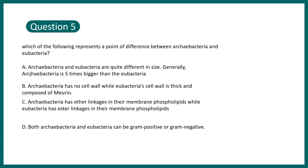Question 5: Which of the following represents a point of difference between archaebacteria and eubacteria? These are time-killer questions with a lot of description. Option A: archaebacteria and eubacteria differ in size — archaebacteria is generally five times bigger. Option B: archaebacteria has no cell wall while eubacteria has a thick cell wall composed of murein. Option C: archaebacteria has ether linkages in membrane phospholipids while eubacteria has ester linkages. Option D: both can be gram-positive or gram-negative. The correct answer is C. Understanding the similarities and differences between archaebacteria and eubacteria is really important for IIT JAM.